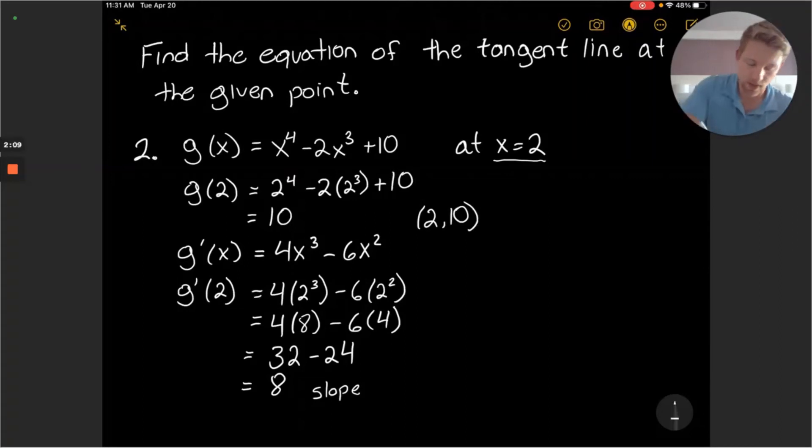So we can rewrite our equation as y minus y1 is 10 equals the slope of 8 times x minus x1. So this would be our point slope form of the tangent line. And then we can rearrange this.